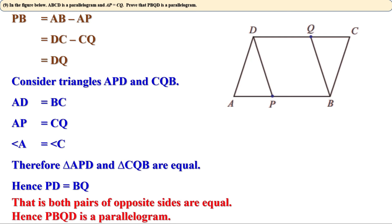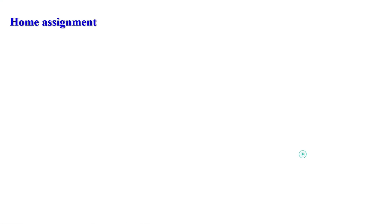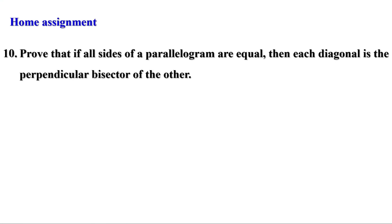Today we have done some problems of page 30. For homework: prove that if all sides of a parallelogram are equal, then each diagonal is the perpendicular bisector of the other. In the next video, we will discuss the remaining problems of pages 30 and 31. Till then, bye.